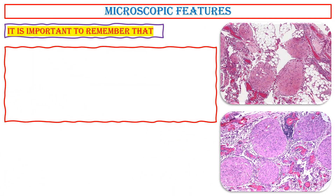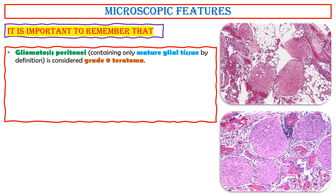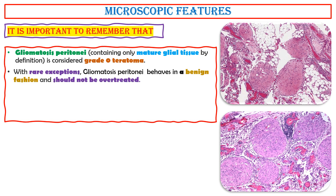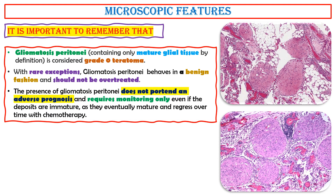It is important to remember that gliomatosis peritoneae containing only mature glial tissue is, by definition, considered grade 0 teratoma. With rare exceptions, gliomatosis peritoneae behaves in a benign fashion and should not be over-treated. The presence of gliomatosis peritoneae does not portend an adverse prognosis and requires monitoring only, even if the deposits are immature, as they eventually mature and regress over time with chemotherapy.